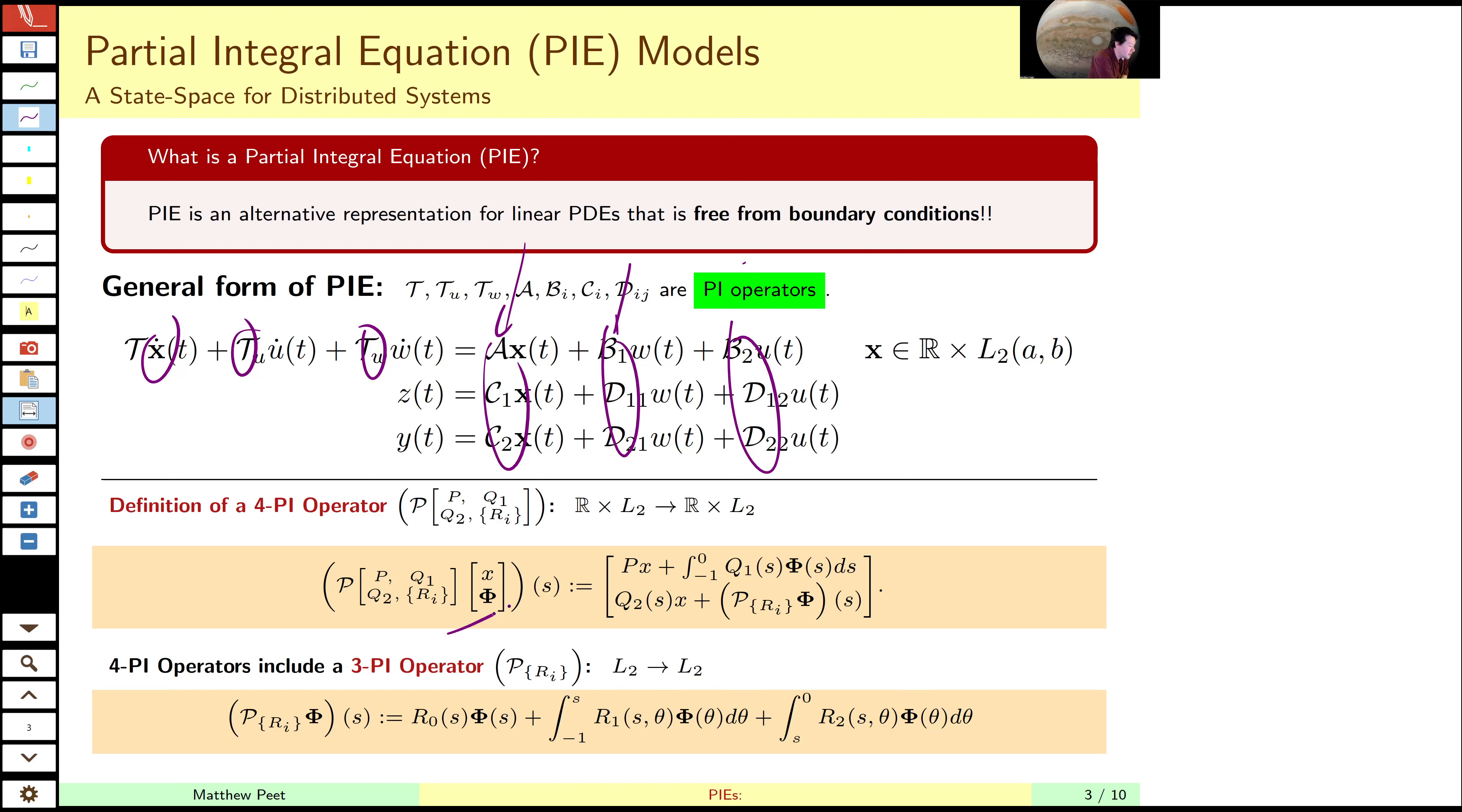We're going to ignore the finite dimensional parts of this and ignore the 4 pi part, and just focus on the operators in the spatial dimension, which are combined multiplier and two kernels. So there's three parameters in the classic pi algebra.